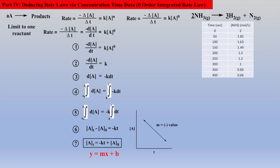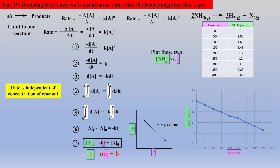Let's examine time-concentration data for the decomposition of ammonia, NH3. If we plot the concentration of NH3 versus time, we should generate a straight line if the reaction follows zero-order kinetics — which it does.